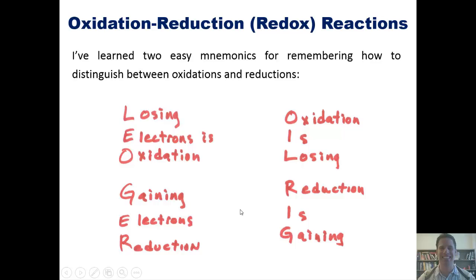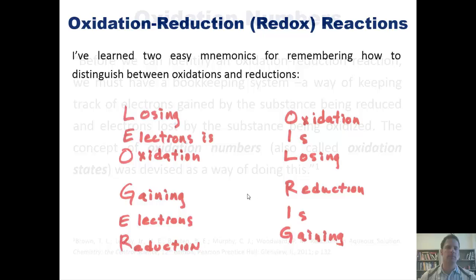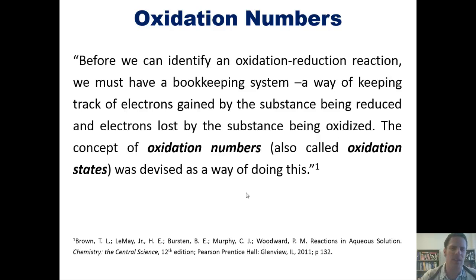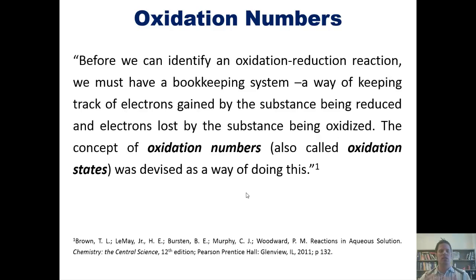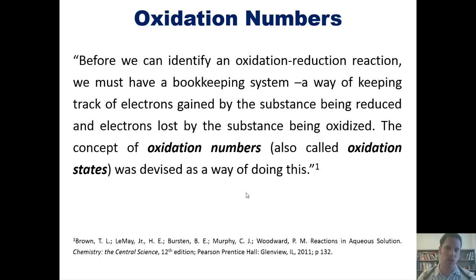Now, according to our book, before we can identify an oxidation-reduction reaction, we must have a bookkeeping system — that is, some way of keeping track of electrons gained by a substance being reduced and electrons being lost by the substance that gets oxidized. The concept of oxidation numbers, also called oxidation states, was devised as a way of doing this. So oxidation numbers are the bookkeeping system that we can use to determine what gets reduced and what gets oxidized in a redox reaction. So we're going to go ahead and review that.